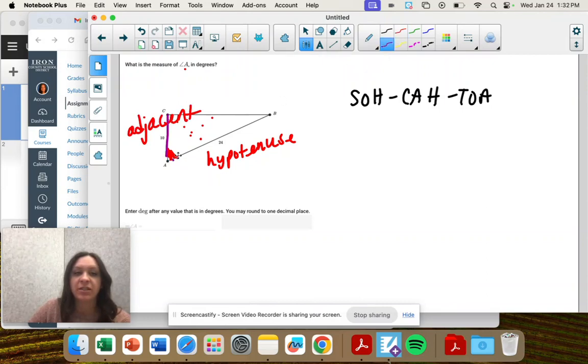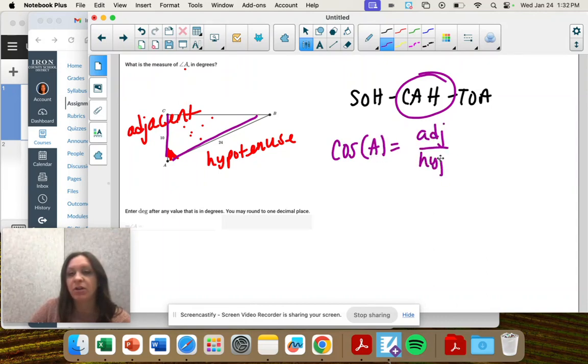So adjacent and hypotenuse is cosine. So cosine of some angle is adjacent over hypotenuse.